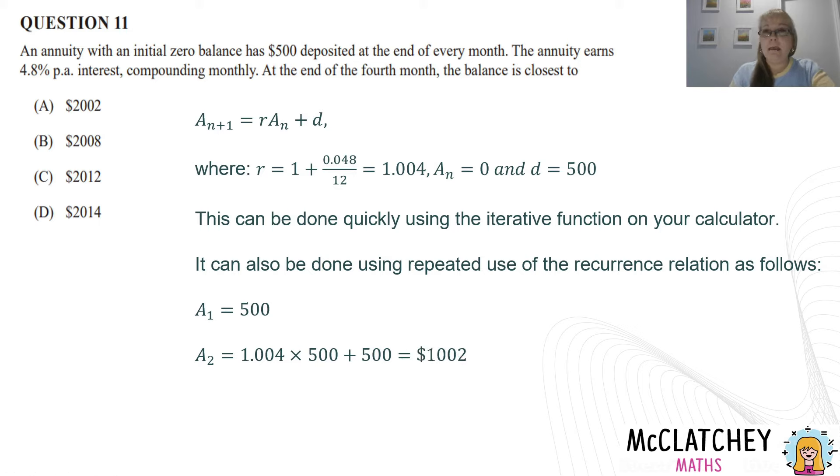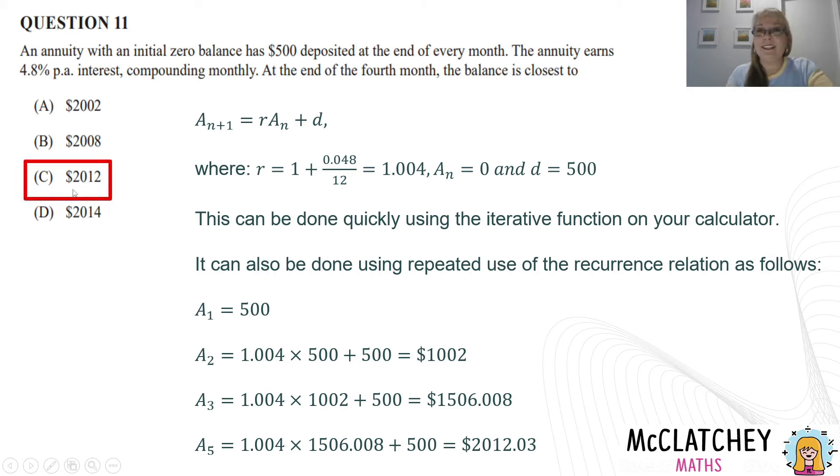Now that becomes my amount for the beginning of period 3. So I'm going to take that 1,002 times it again by 1.004 and then get an answer and then add 500. And then I get 1,506. And then at the end of the fourth month, that should say A4. It's got 1.004 times the answer from before. Add 500, you get $2,012.03. Now it says the balance is closest to. So if we look here, they've rounded these off to whole numbers. It's closest to C.